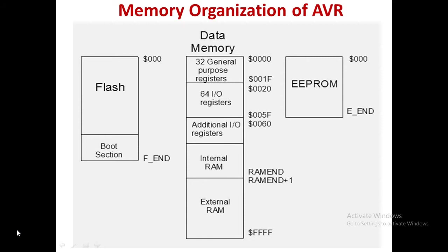In an AVR, basically there are three types of memory: flash memory, data memory, and EEPROM memory. Flash memory is used for storing programs, so it's also known as program memory. In ATmega32, the flash memory is 32 KB. SRAM is 2 KB and EEPROM is 1 KB.